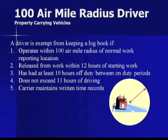Normal work reporting location means starting and stopping in the same spot every day. If you try to use the 100 air-mile exemption but start in Moorhead and end the day parking in Fergus Falls, you can't use it — you have to use a logbook for that day. Once you get to Fergus Falls, you can reestablish your 100-air-mile exemption. The same applies to the ag exemption: the day you're moving, you need a logbook.